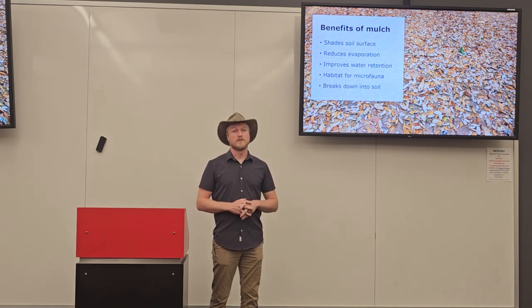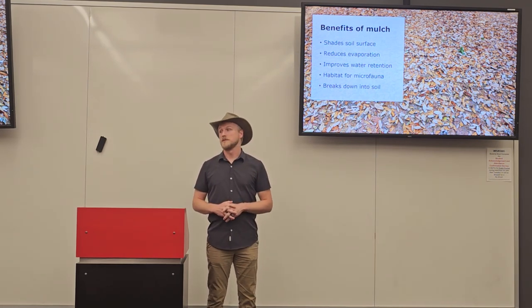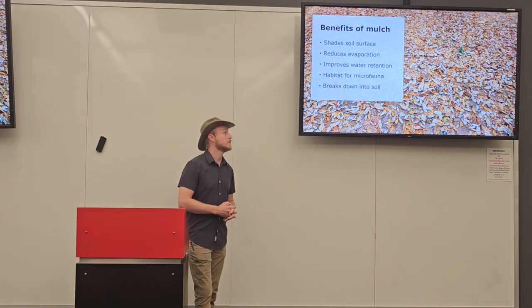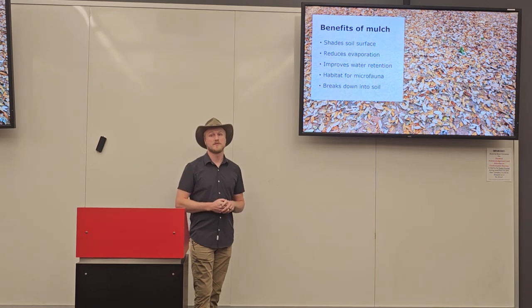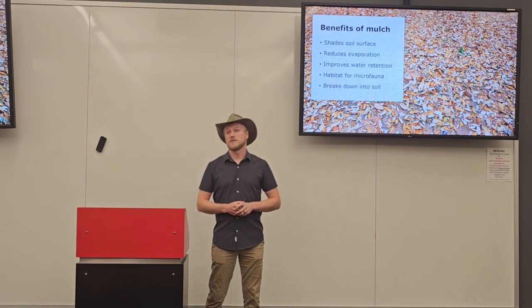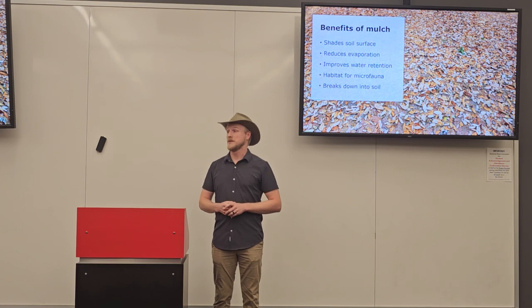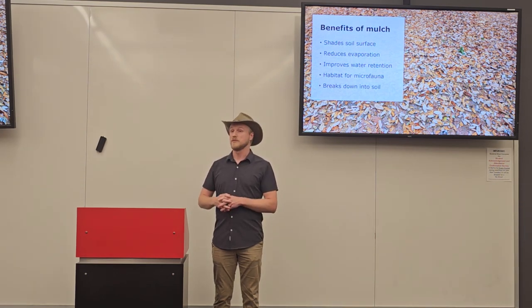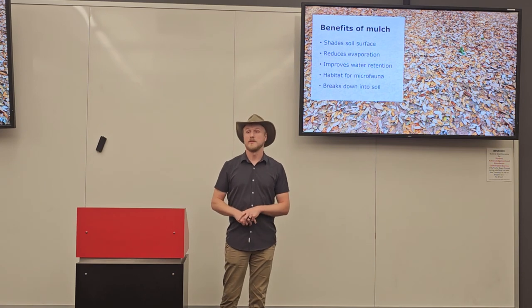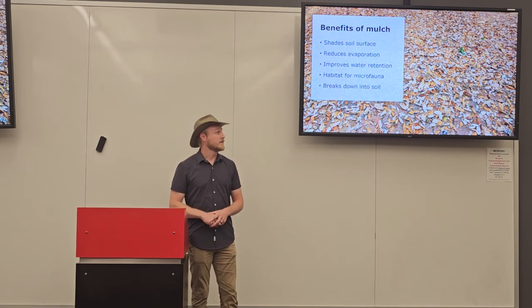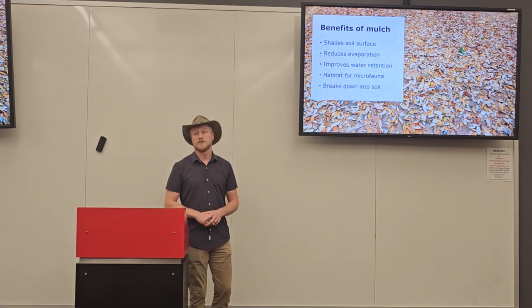One form of mulch inspired by ecological succession is called chop and drop — the idea where you grow fast-growing species solely for the purpose of cutting them down, chopping them, and dropping them around your other plants to feed them as a form of mulch. That concept comes from ecological succession.